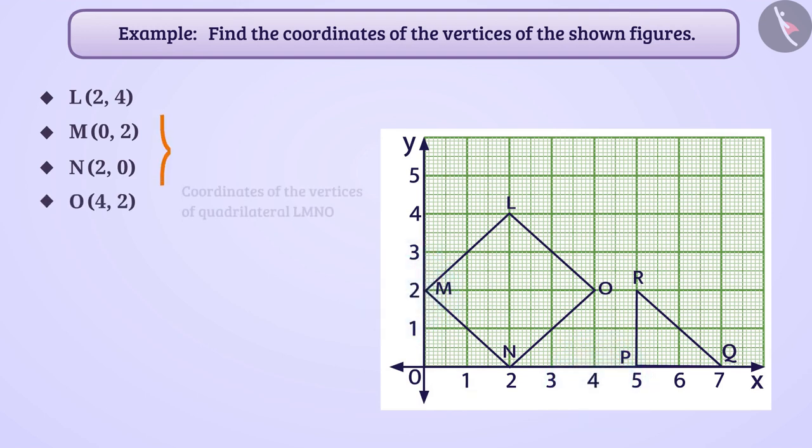We can say that the vertices of quadrilateral LMNO have coordinates 2, 4, 0, 2, 2, 0 and 4, 2.